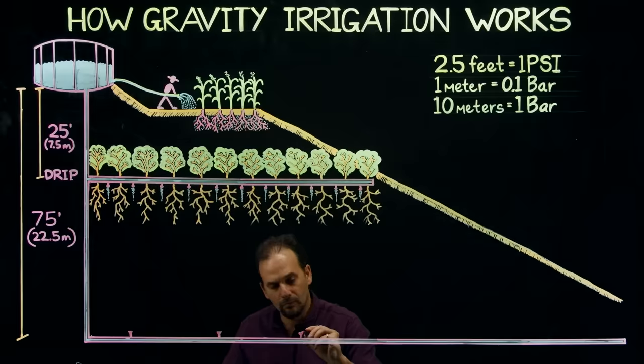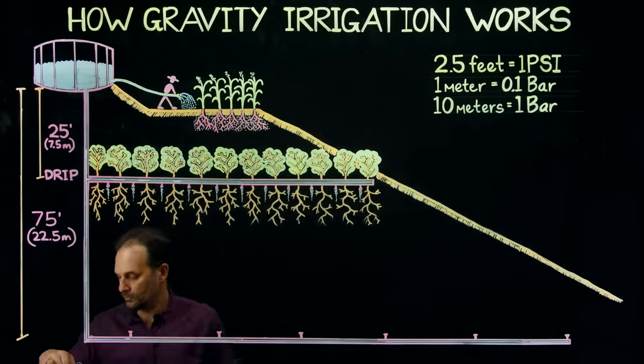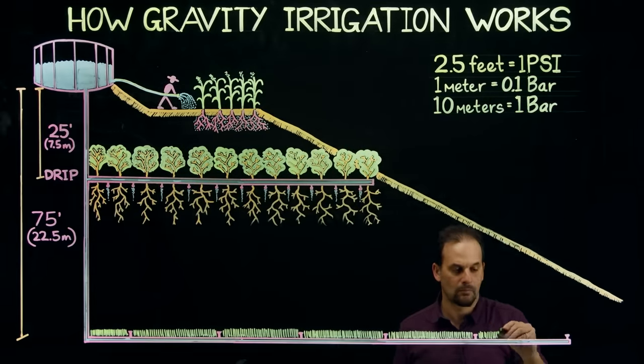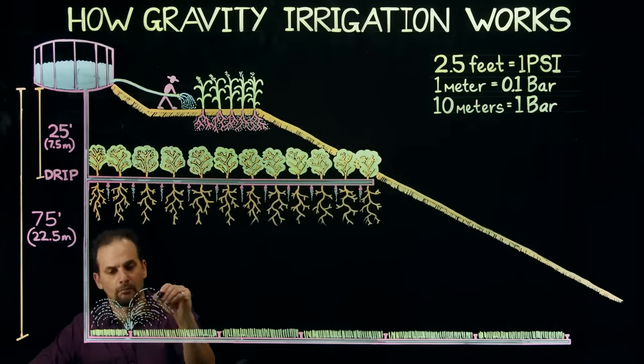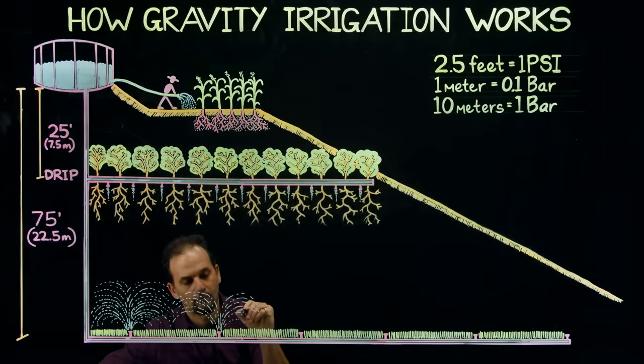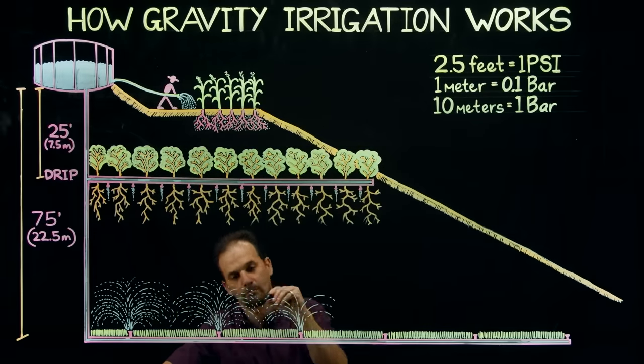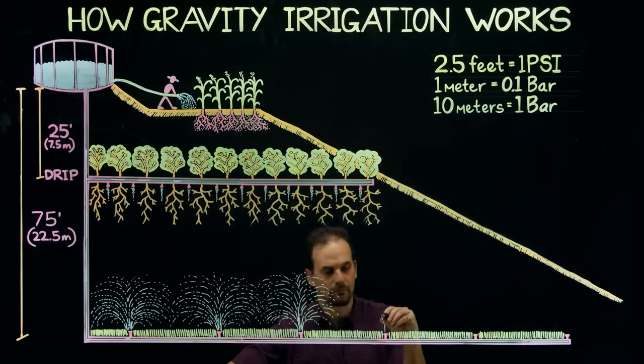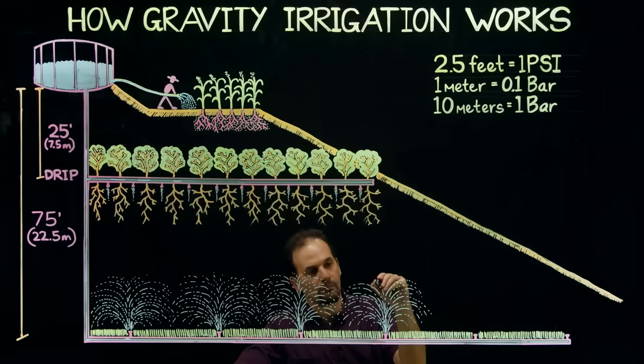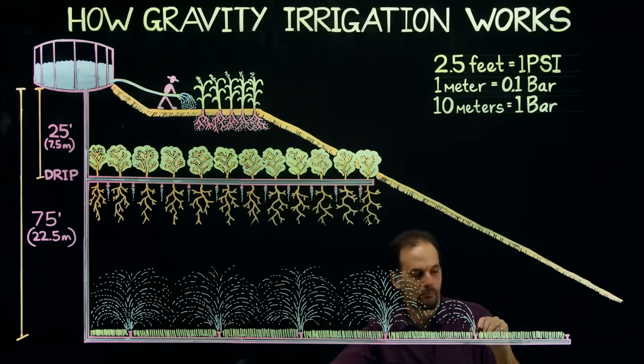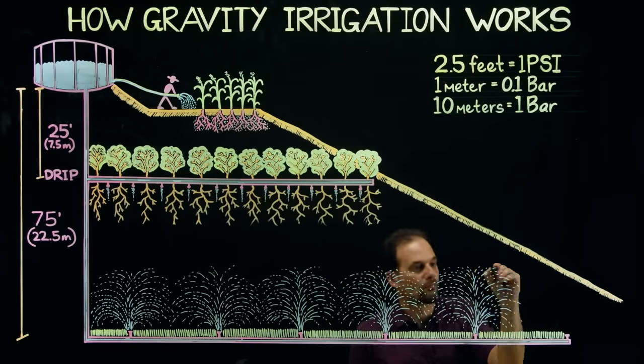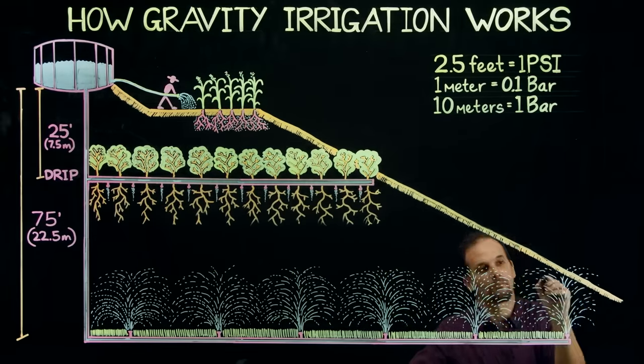The optimum pressure needed to run a sprinkler system is at least 30 psi. It depends on the size and volume of your system, of course. But at 30 psi, your water storage needs to be at least 75 feet above where your sprinklers are outletting. So you either need a water tower or water storage on a site with significant elevation changes.